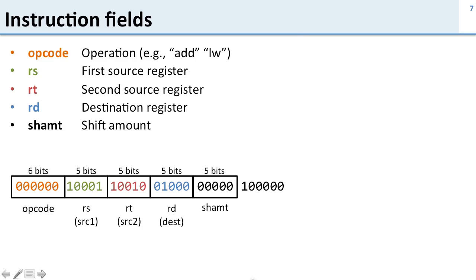Then the last two chunks are the shift amount and the function selector. The function selector works together with the opcode to decide exactly what you do. For example, the function selector for add is 32 and for subtract it's 34.